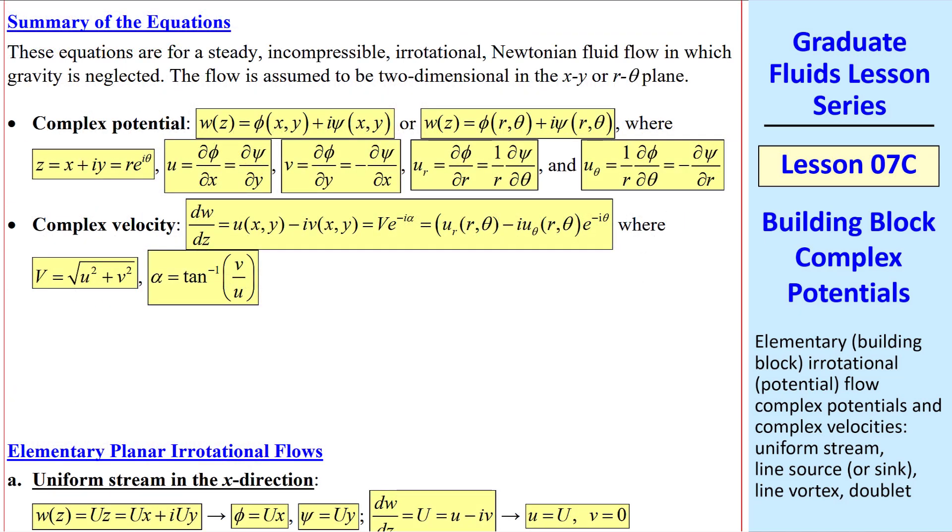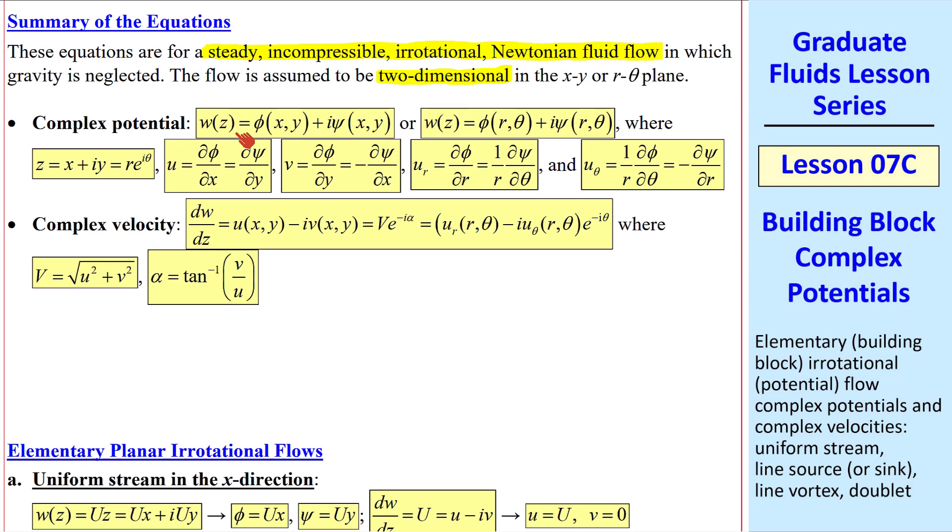First, a quick summary of the equations. We're talking about steady incompressible irrotational Newtonian fluid flow, and we're neglecting gravity. We also approximate the flow as two-dimensional. We define the complex potential w of z as phi plus i psi, where phi and psi can be in either Cartesian or cylindrical coordinates.